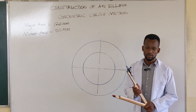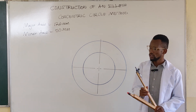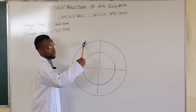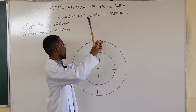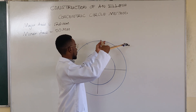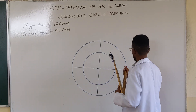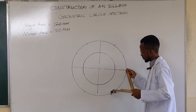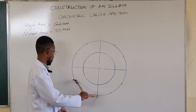You place your compass on each quadrant — these are quadrants, not corners. For example, place the compass here, strike an arc, strike another arc there. Move to the other quadrant, strike an arc. Move to the other quadrant, strike an arc. And from here, again, strike an arc and an arc on this side.